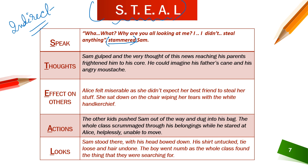For T — Thoughts: 'Sam gulped, and the very thought of this news reaching his parents frightened him to his core. He could imagine his father's skin and his angry mustache.' Here I'm giving away Sam's thoughts. We don't know exactly what happened, but we can deduce that something frightening has occurred which he doesn't want his parents to know about.